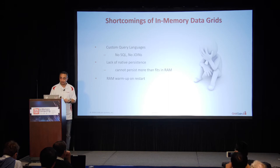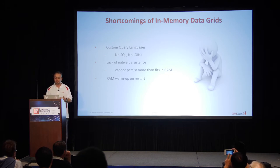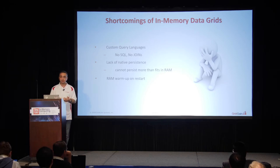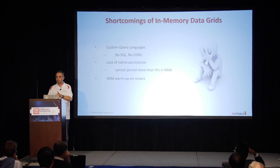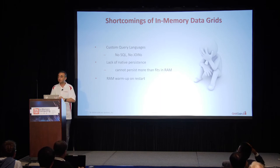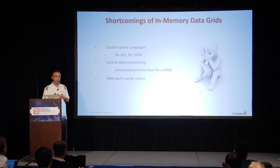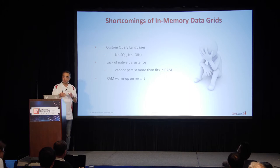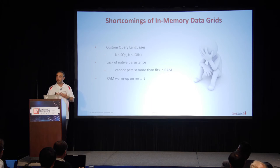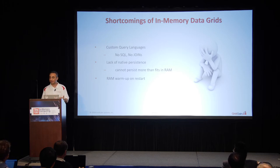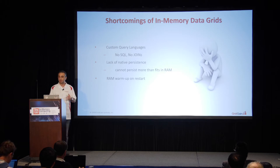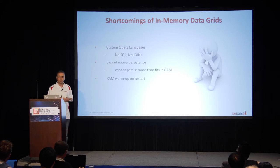However, in-memory data grids still have their shortcomings. Custom query languages — there's no SQL, so you have to learn a custom API. Most do not support joins. Just imagine querying your data without joins — you can't query all employees that work for the same company in one go. Within memory data grids, you often have to execute queries manually: first query one part, bring the results back, then issue another query. So lack of joins is definitely painful. Lack of native persistence is also an issue — in-memory data grids are good for integrating with existing databases, but you do have to have an existing database. Without one, you have just a memory store with no persistence, no way to survive restarts or crashes.